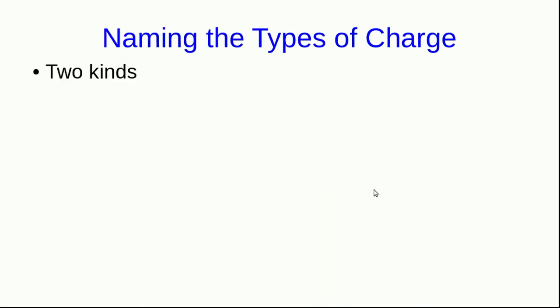So we know that there are two kinds of charge but what should we call them? Well the choice of what to name them is really arbitrary. We could call them blue and gray or Tom and Betty or flurb and blob. It really doesn't matter except that there's an experimental observation that gives us a reason to choose a particular pair of names.